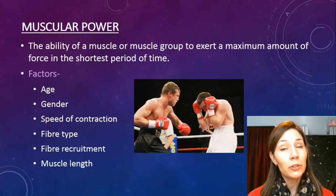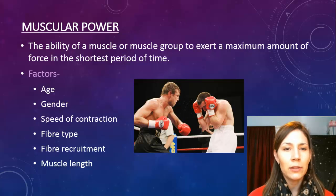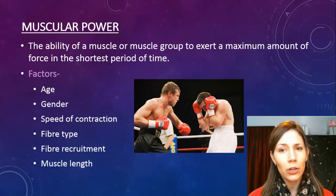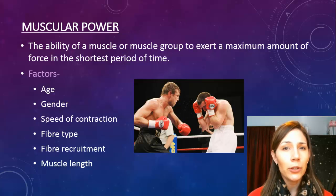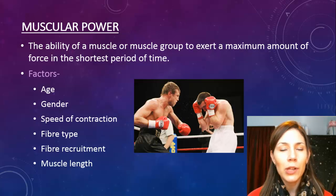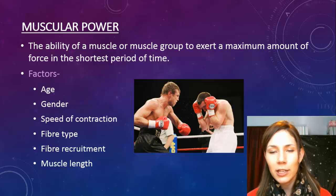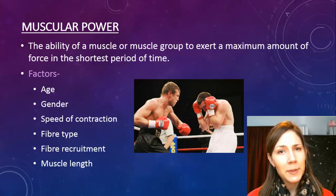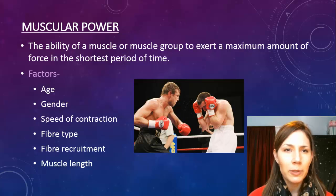Muscular power is the ability of a muscle or muscle group to exert a maximum amount of force in the shortest period of time. As mentioned earlier, muscular strength involves a trade-off between force and speed. Boxers are a fantastic example of people who find the perfect balance between force and speed, needing to be quite powerful in their movements. Age past 30 will reduce muscular power as muscular strength declines, and fiber type again plays a role — a high percentage of fast twitch muscle fibers is needed to increase power.